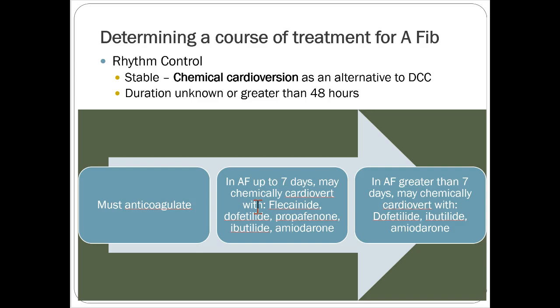For chemical cardioversion, you still need to anticoagulate the patient because any time you're resynchronizing the atria, you're at risk for throwing a clot to the brain. For AFib up to seven days in duration, you can chemically cardiovert with flecainide, dofetilide, propafenone, ibutilide, or amiodarone. For AFib greater than seven days, it's more difficult to convert with a class 1 agent, so you stick to class 3 only — dofetilide, ibutilide, or amiodarone. Electricity is generally preferred, but if someone doesn't respond after two to three shocks, pharmacologic cardioversion is the next step.